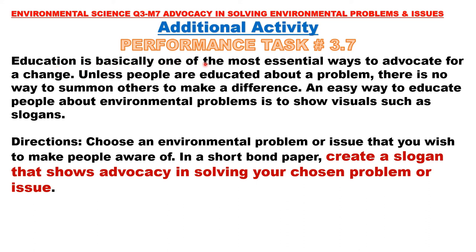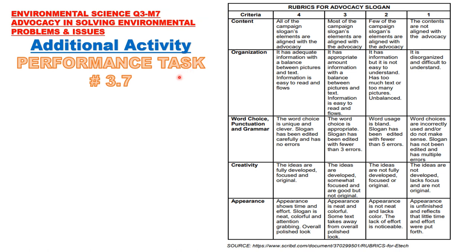Education is basically one of the most essential ways to advocate for change. Unless people are educated about a problem, there is no way to summon others to make a difference. An easy way to educate people about environmental problems is to show visuals, such as slogans. For Performance Task 3.7, choose an environmental problem or issue that you wish to make people aware of. In a short bond paper, create a slogan that shows advocacy in solving your chosen problem or issue.